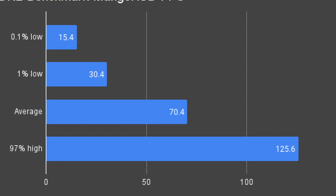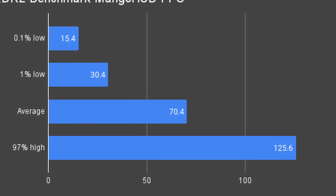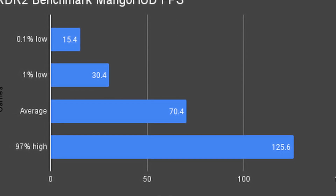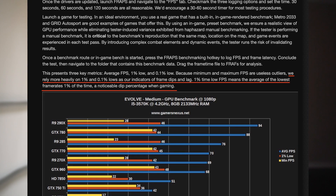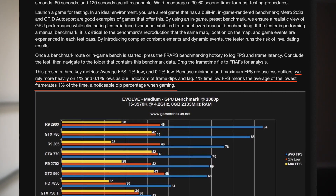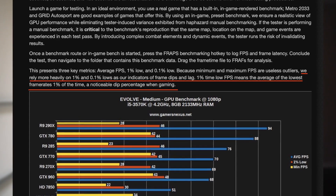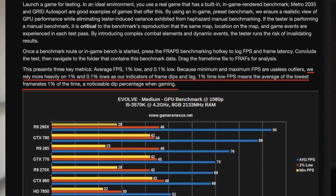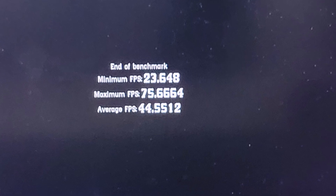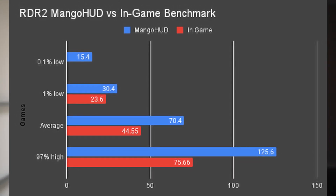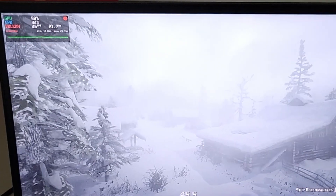I got 125.6 for the 97% maximum FPS, 30.4 for the 1% low, 15.4 for the 0.1% low, and 70.4 for the average. According to Gamers Nexus, this means the average low is 30.4 FPS, and I was getting 15.4 FPS when it lags. Compared to the game's built-in result — which was 23.6 minimum, an average of 44.55, and a maximum of 75.6 — I think the in-game numbers are more accurate because the game has a lot of blackout loading screens in the middle, which produced 120 FPS that were also counted in the MangoHUD result.